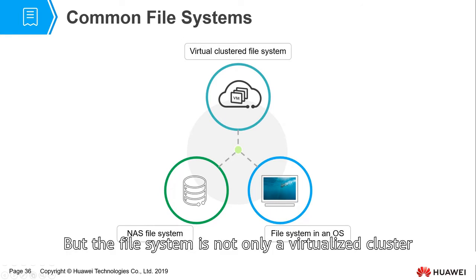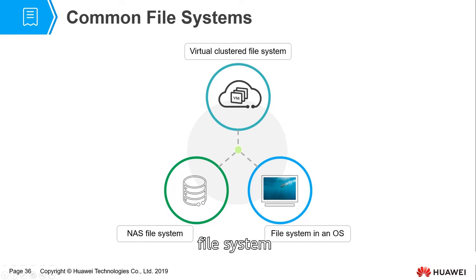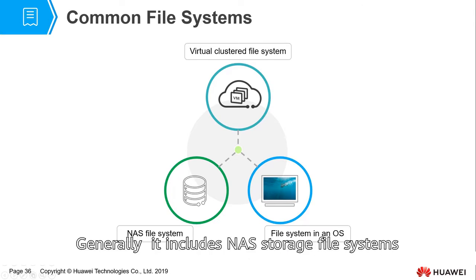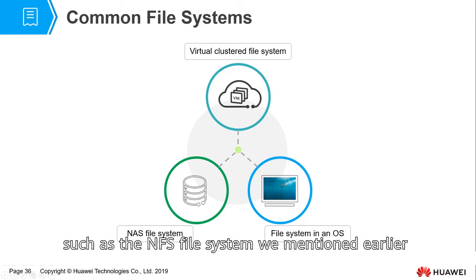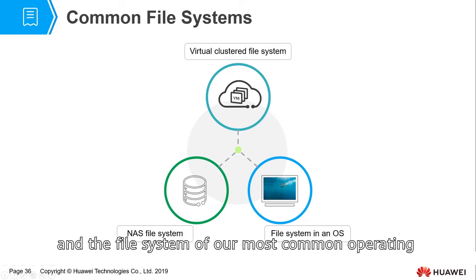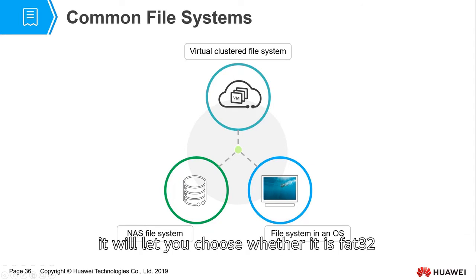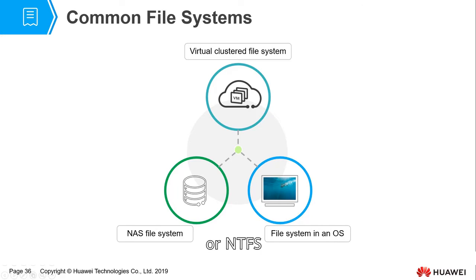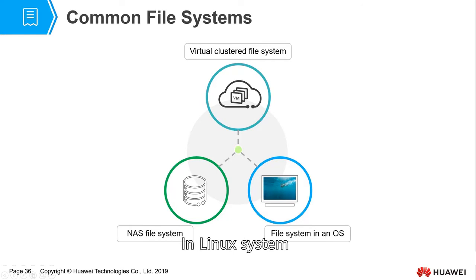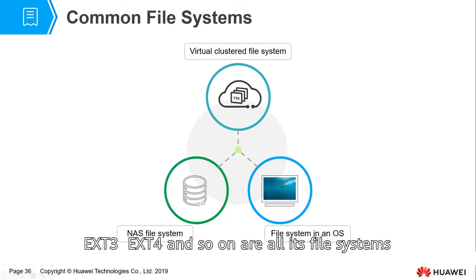The file system is not only a virtualized cluster file system — it generally includes NAS storage file systems such as NFS, as well as the file systems of common operating systems. For example, when the Windows operating system is formatted, you choose whether it is FAT32 or NTFS, which are both its file systems. In Linux systems, ext3, ext4, and so on are all its file systems.